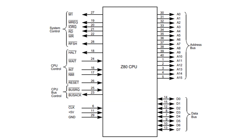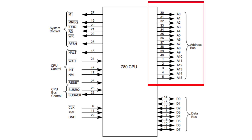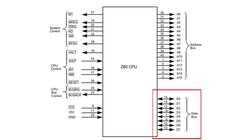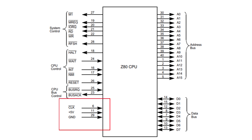On the Z80 there are 40 pins, but we don't need to look at all 40 because 16 of them are address lines and eight of them are the data bus. We don't need to look at each one individually because that's simply the address the CPU wants to look up and the 8-bit data going in and out of the CPU. Of course there's also the clock, the five volts, and the ground line, so I'm going to consider those pretty much covered already.